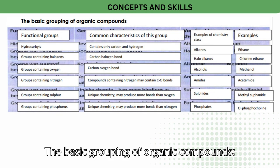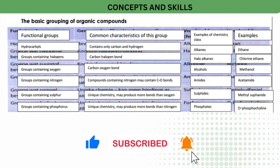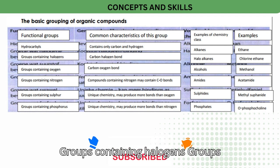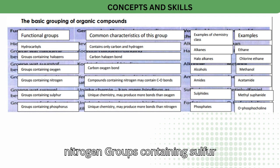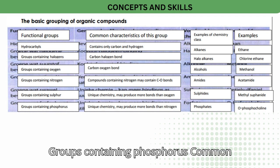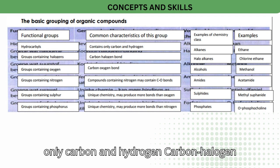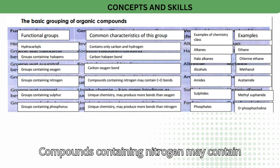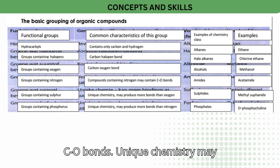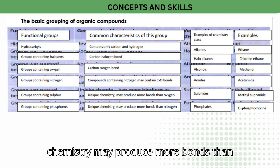The basic grouping of organic compounds: functional groups. These include hydrocarbons (containing only carbon and hydrogen), groups containing halogens (carbon-halogen bond), groups containing oxygen (carbon-oxygen bond), groups containing nitrogen (which may contain C-O bonds), groups containing sulfur (unique chemistry, may produce more bonds than oxygen), and groups containing phosphorus (unique chemistry, may produce more bonds than nitrogen).